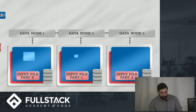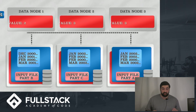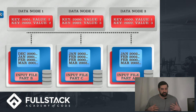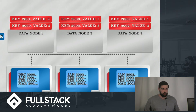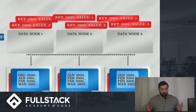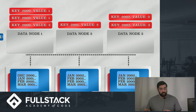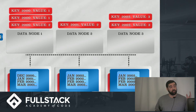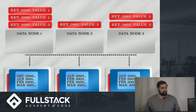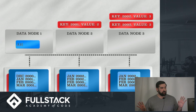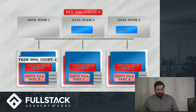During the map phase, each data node reads its input file and writes key-value pairs of the year and the number of occurrences within that file. Then the shuffle phase occurs, where Hadoop automatically sends all like data to a different processor — for example, year 2000 data goes to data node 1, 2001 to data node 2, and 2002 to data node 3. Finally, the reduce phase sums up all the different instances of each type of data.